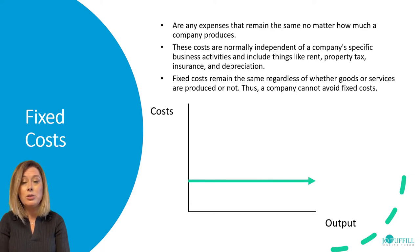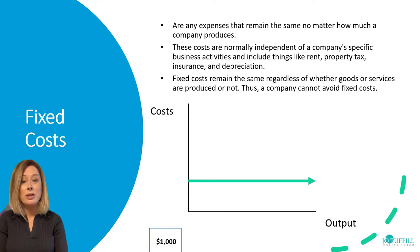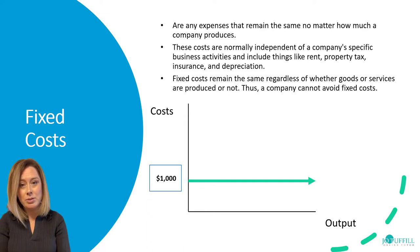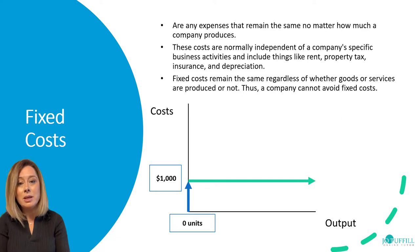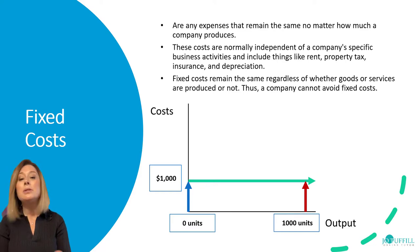You cannot avoid them. So in our example, let's say the fixed costs are $1,000. At zero units it's still $1,000, and if we were to produce 1,000 units, it would still be $1,000.